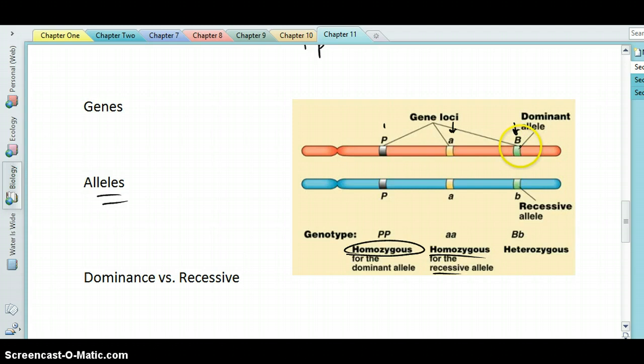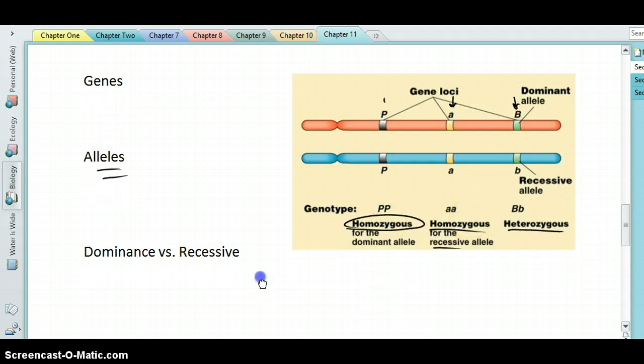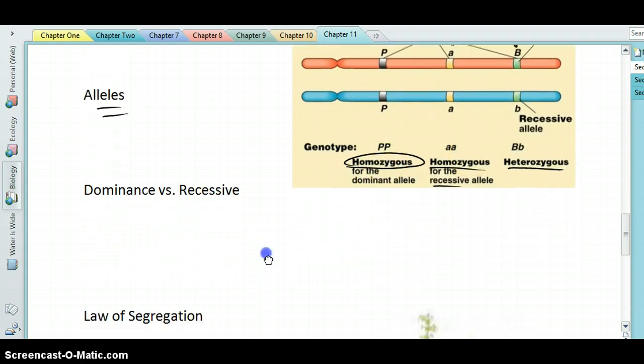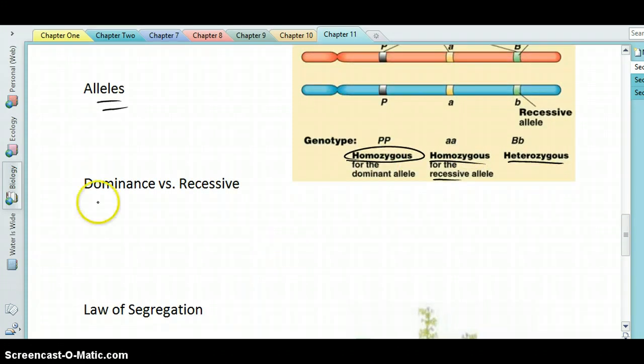But for the B, you'll notice that one chromosome has the dominant form, the big B. One has the recessive form, the little b. And therefore, for the B gene, this individual is heterozygous. So for some genes you can be homozygous, some you can be heterozygous. Amongst the homozygous, you might be homozygous dominant or homozygous recessive. So this was another thing Mendel discovered, the idea of dominant and recessive genes, or dominant and recessive alleles.